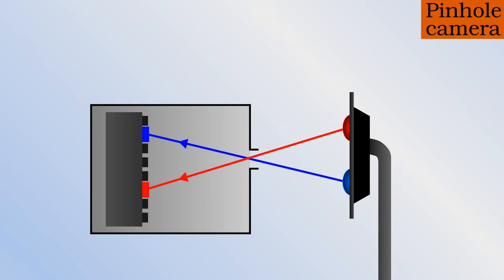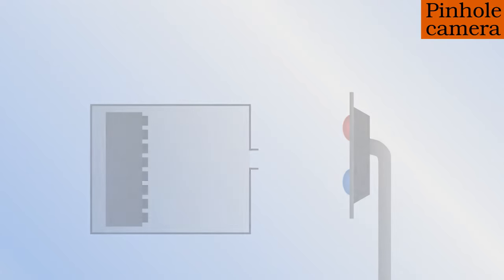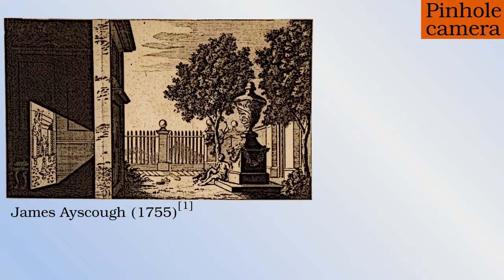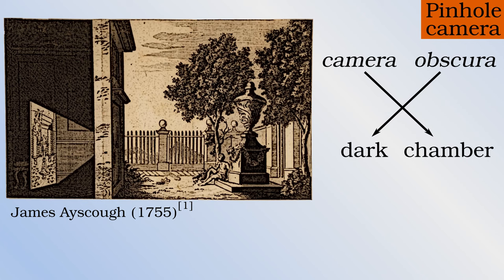Your brain has naturally adapted to compensate for this inversion effect in your eye. This type of darkened box with a pinhole is one of the first optical tools used to actually record images. The modern word camera comes from the Latin phrase camera obscura, or dark chamber. Here is an 18th century illustration of a camera obscura with a pinhole.